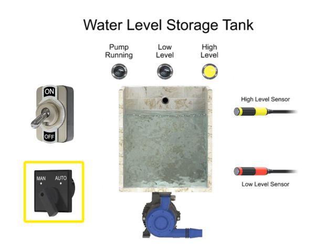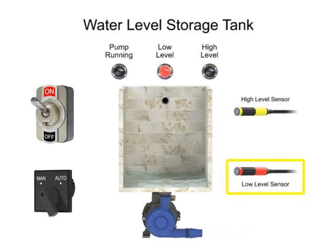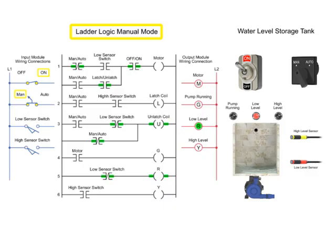In Manual mode, the program controls the water level by monitoring the low sensor switch input. In this mode, the pump motor turns off when the low sensor switch is off and turns on when the low sensor switch turns on.